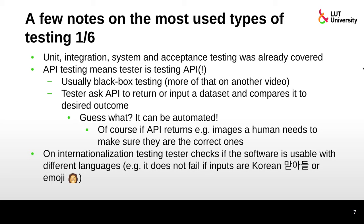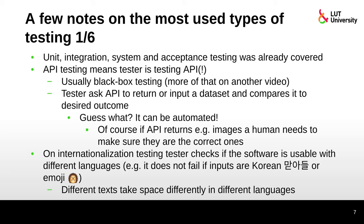Internationalization testing means the tester checks if the software is usable with different languages. In the 1960s most software was English only, but nowadays software is localized to different languages. We need to make sure the software does not fail if we input Korean text or emojis, for example. As shown in Google Slides, it can present Korean letters and emoji without failing. Different languages also take different amounts of space, so the user interface needs to be designed to accommodate different text lengths.